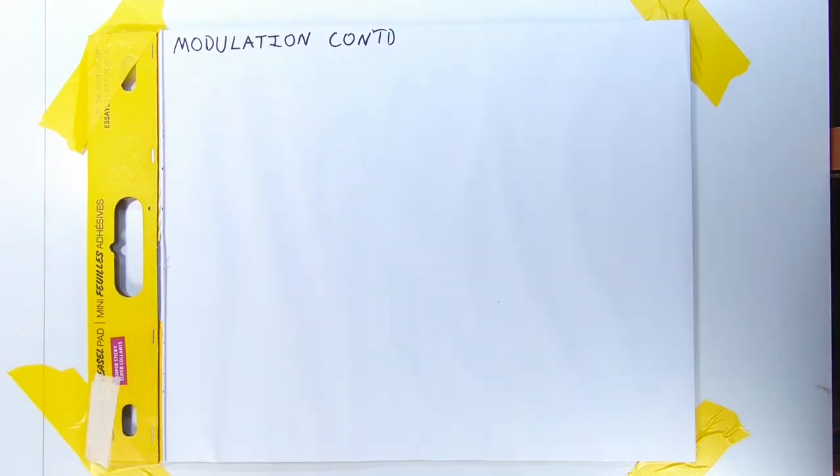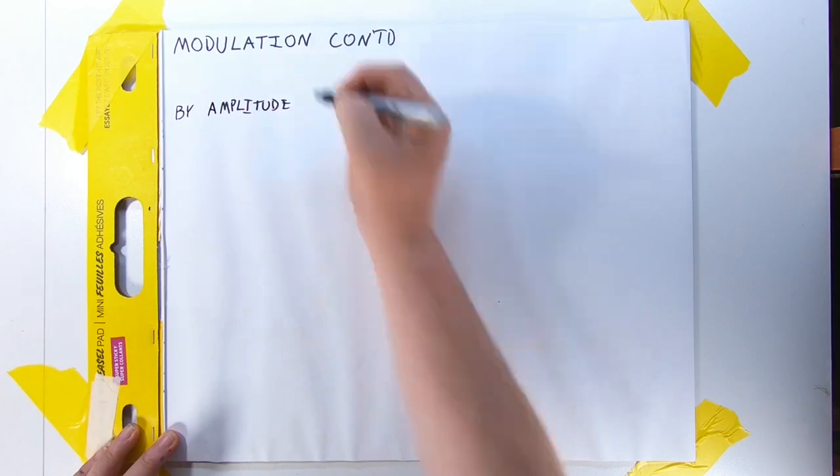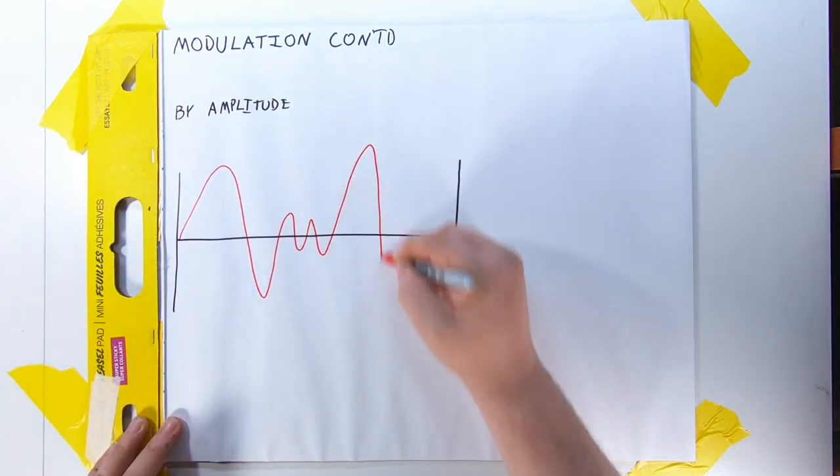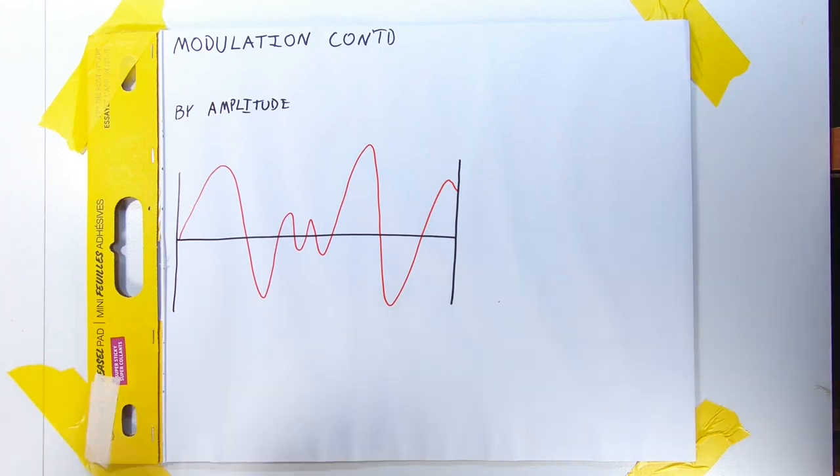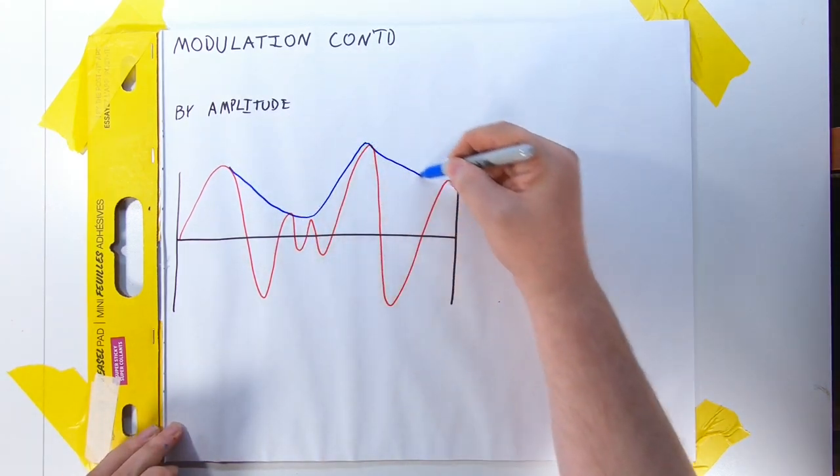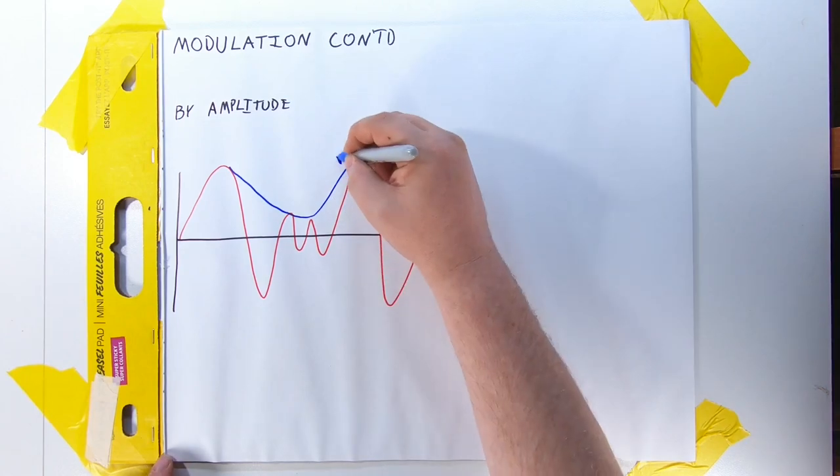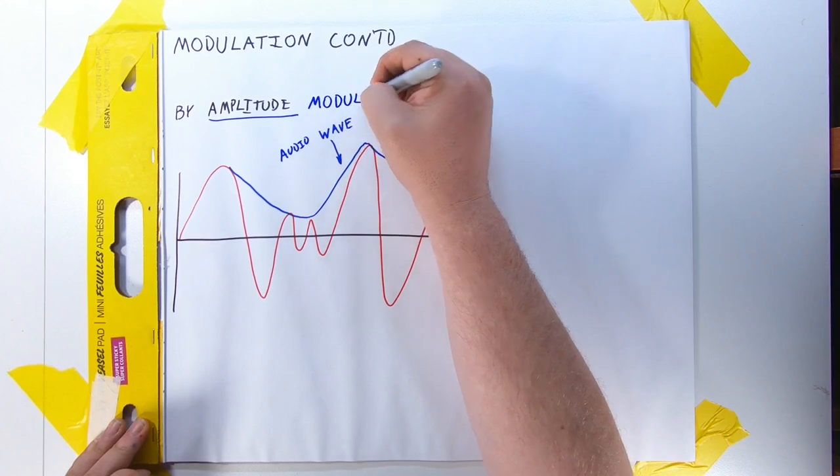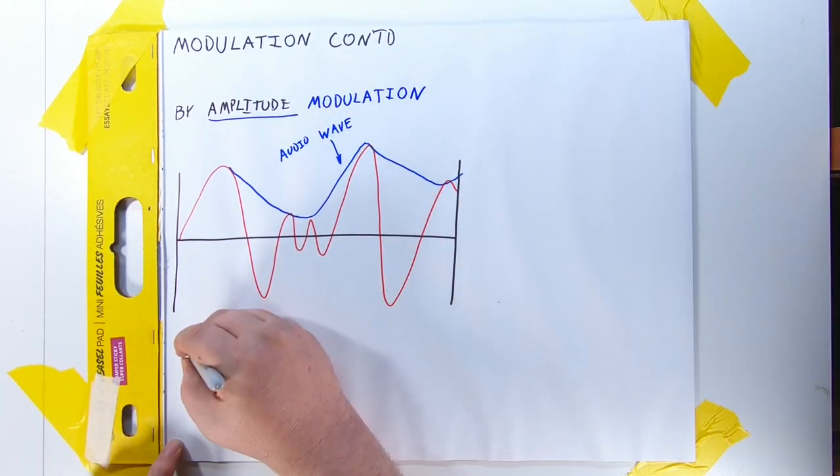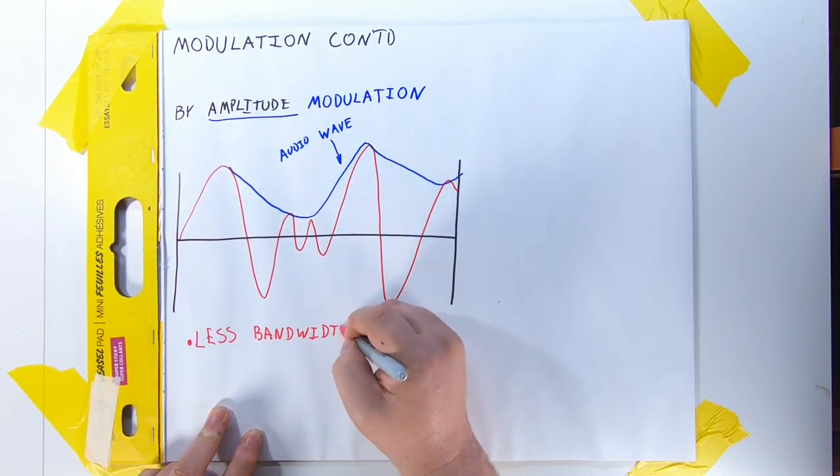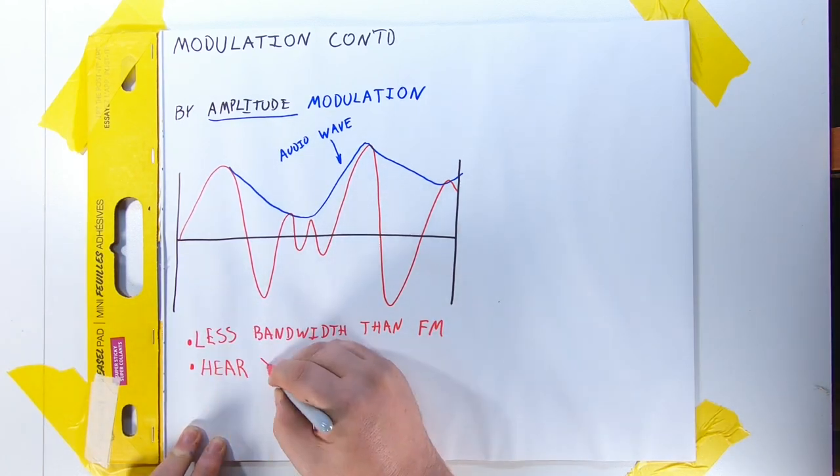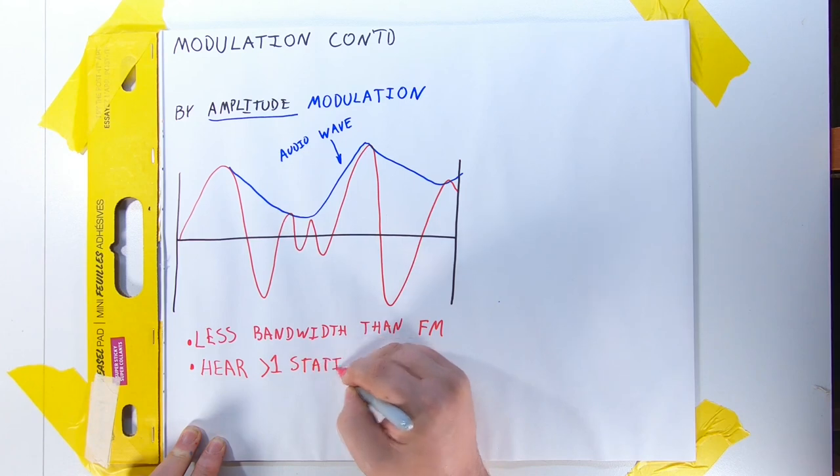Okay, moving on with modulation. After CW, the next simplest method of modulating an RF wave is to change its amplitude, the electrical up and down that makes a wave look like a wave. If I draw a wave with varying amplitude, you can kind of see another wave entirely being drawn if I connect the peaks together. That phantom wave is the information we're sending. This is amplitude modulation, also known as AM. It uses a lot less bandwidth than FM, but more than CW. Also, unlike FM, you can hear multiple stations simultaneously. This is sometimes good, sometimes bad.